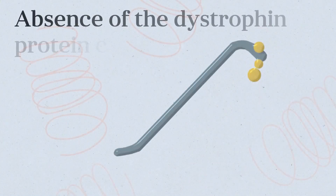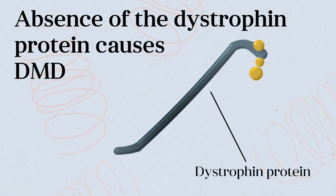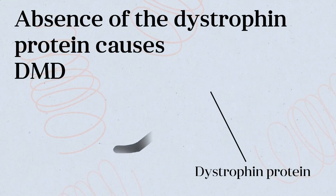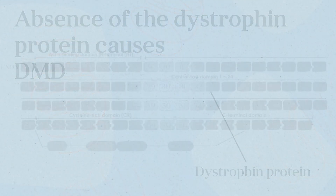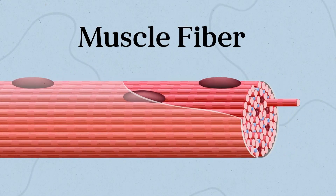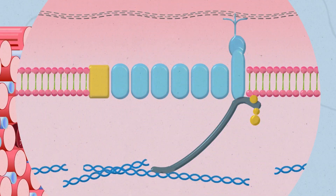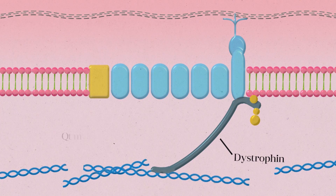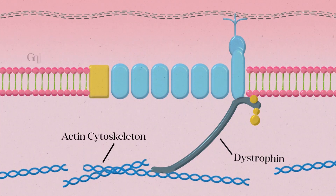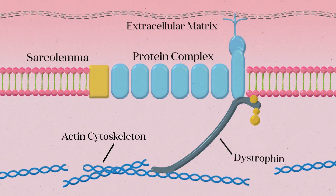To understand how the absence of the dystrophin protein can cause Duchenne muscular dystrophy, or DMD, it is important to understand how the protein functions. The DMD gene is the largest gene in the human genome, and it encodes a very large protein located in the muscle fiber cytoplasm. The dystrophin protein's main function is to link the contractile element of the muscle fiber, or the actin, to a large complex of proteins that span the sarcolemma, a specialized membrane that surrounds the muscle fiber.